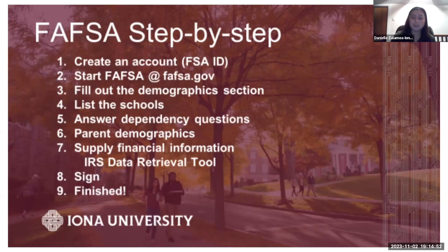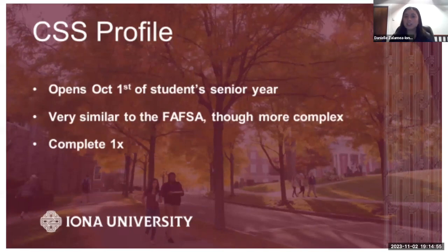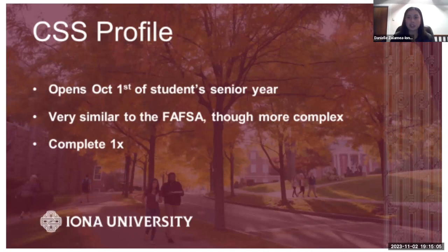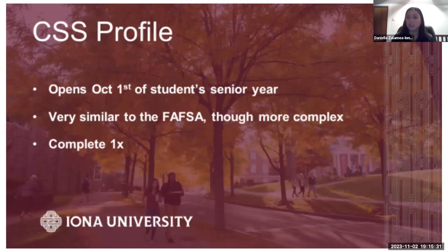The CSS Profile is a College Board document used to see if there's additional scholarship or aid available. Not every school requires one — Iona, for example, only requires the FAFSA. The CSS Profile opens October 1st of the student's senior year. It's similar to FAFSA but a bit more complex, going into greater detail. One benefit is that you only need to complete it once, whereas FAFSA must be completed every year.